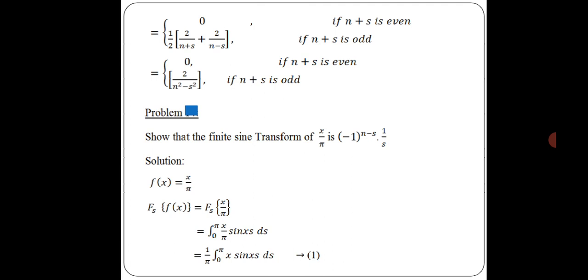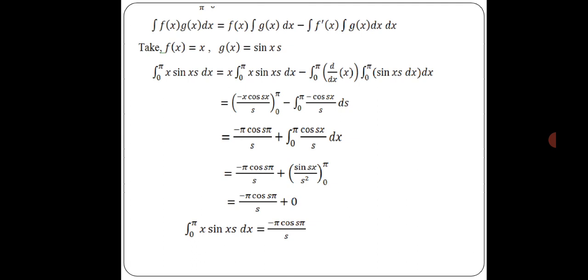The second problem: show that the finite sine transform of x/π is (-1)ⁿ⁺¹ · (1/s). Solution: given f(x) = x/π. Using the formula, fs{x/π} = integral from 0 to π of (x/π) sin(sx) dx = (1/π) integral from 0 to π of x sin(sx) dx, since 1/π is a constant.